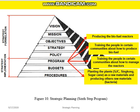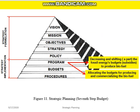Strategy Implementation — Program: producing the biofuel reactor, training people in certain communities about how to produce biofuel, and training them about how to manage the reactor and plant raw materials. Budget: decreasing and shifting the fossil energy budget subsidized to produce biofuel, and allocating the budget for producing and commercializing biofuel.